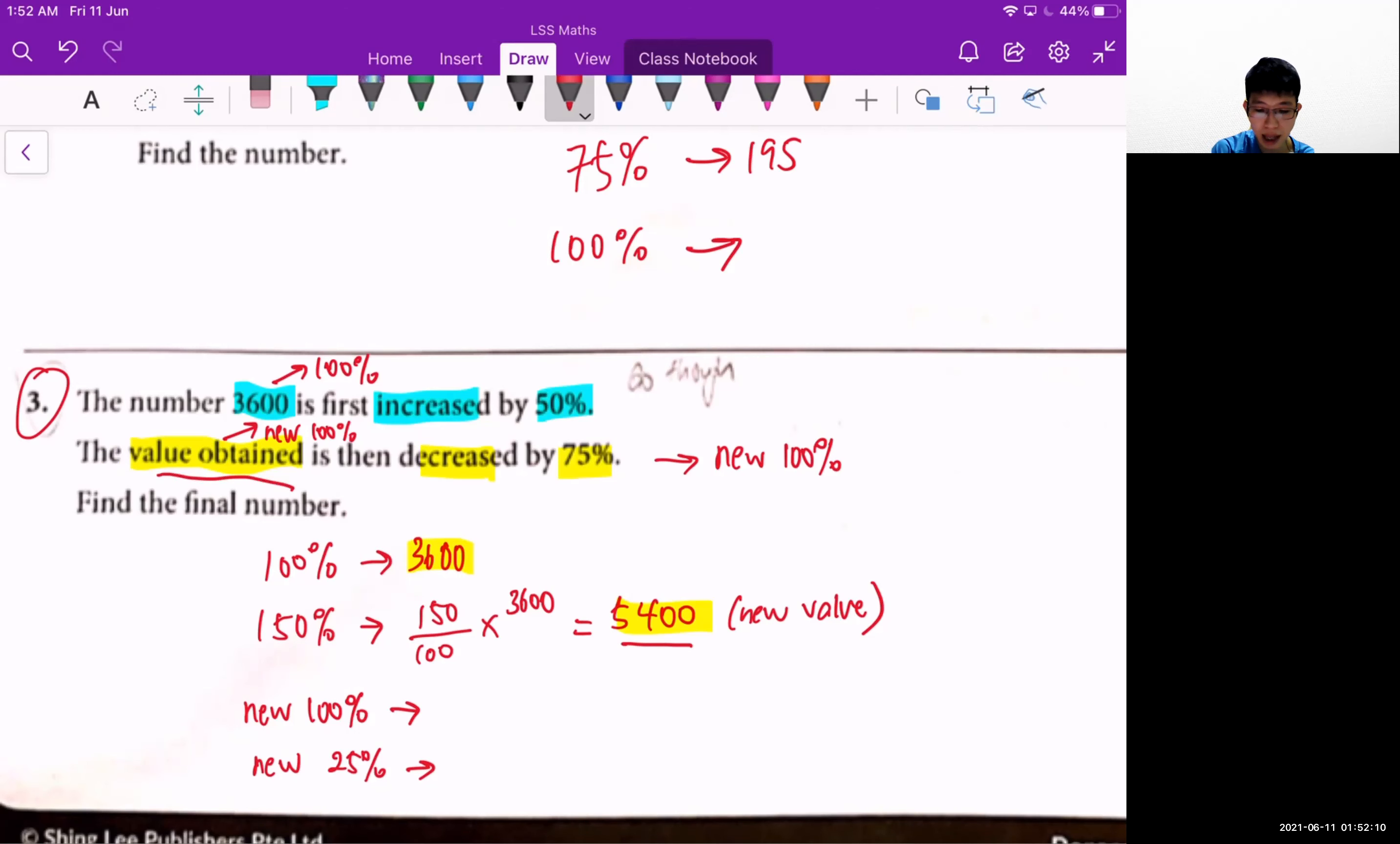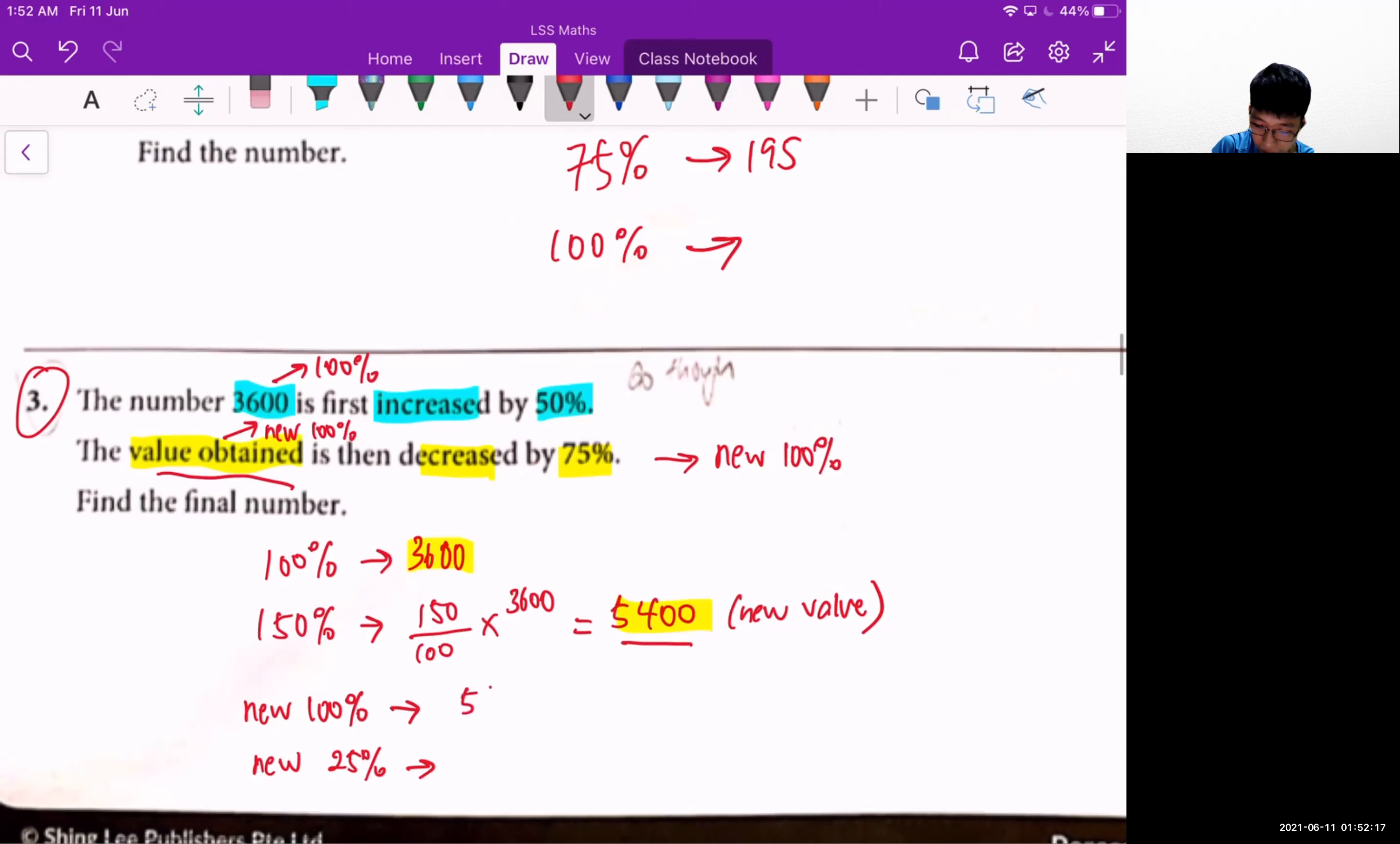We cannot say that this one is 150% as a base. We must say that this is the new 100%. So our new 100% will then be 5400.